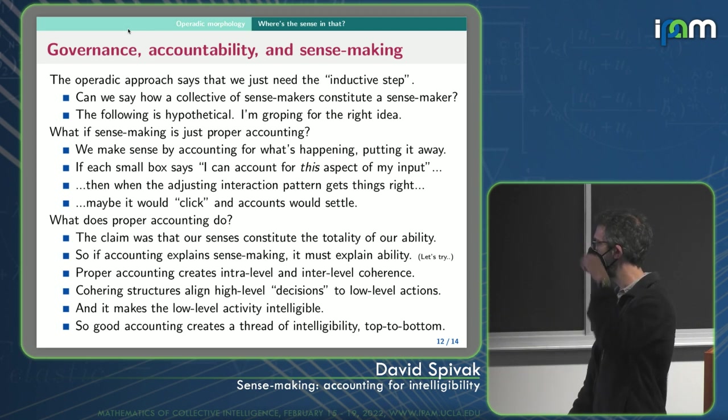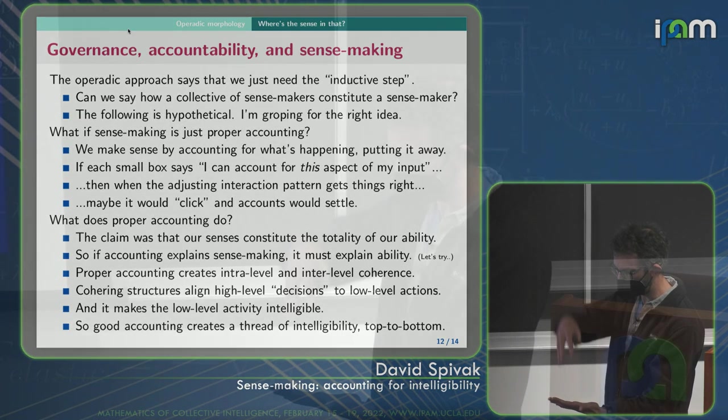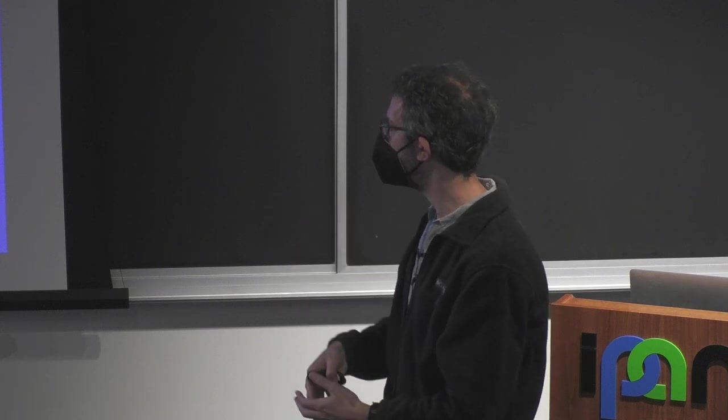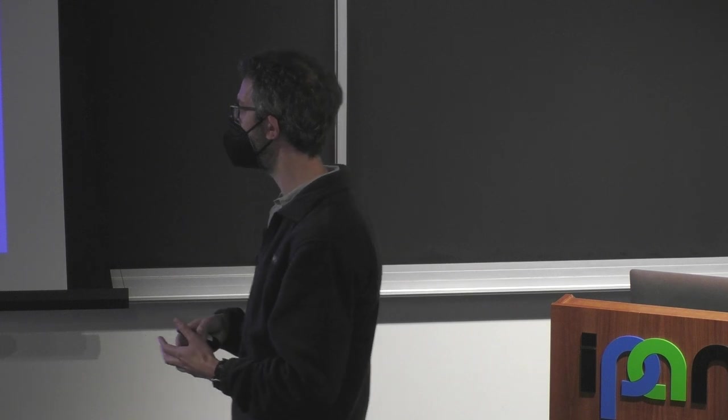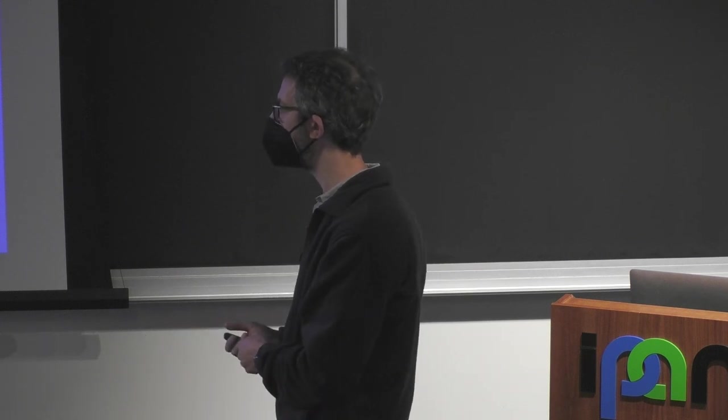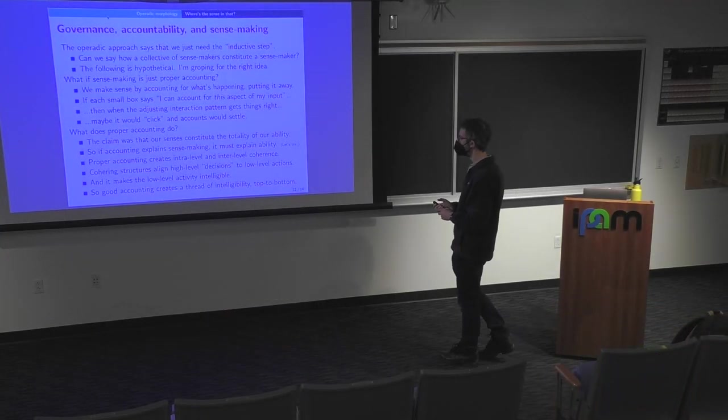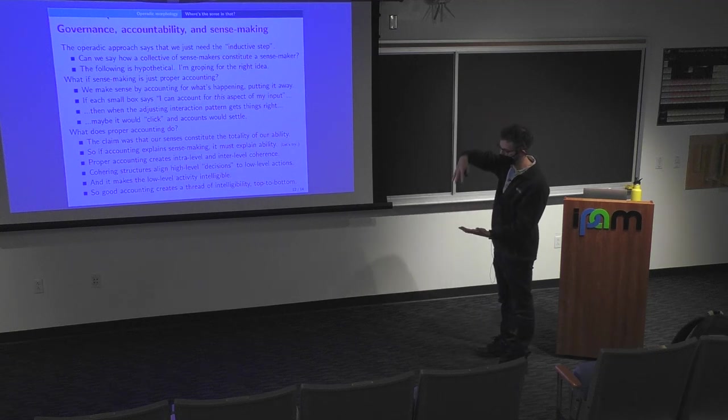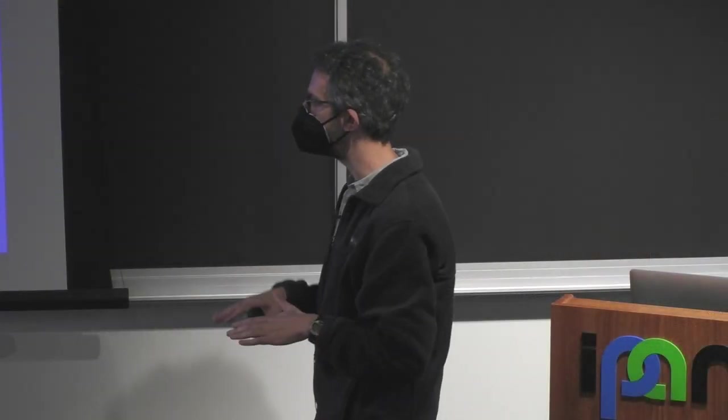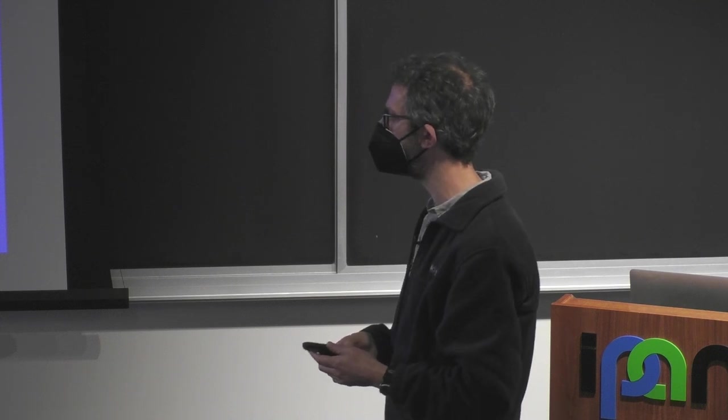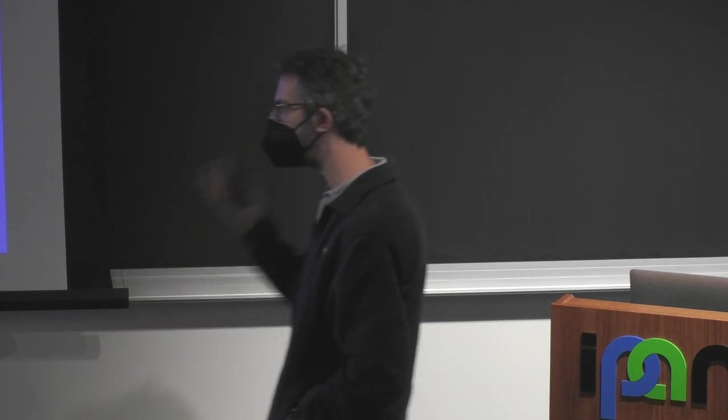So that proper accounting creates intra-level, like between us and inter-level, between-level coherence. So when the government wants me to have an account of my nonprofit, they want to be able to look into what's going on at their level and make a coherence with the sort of stuff we do. So cohering structures align high level decisions to low level actions. So they get to decide whether we get to be a nonprofit or not, they get to decide what to do with us.